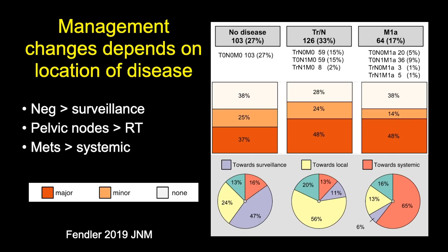The results of PSMA PET really change disease management. Patients with a negative PSMA PET had their management change towards surveillance instead of active treatment. Patients with nodal disease in the pelvis or prostate bed were getting local or radiation therapy to pelvic nodes or oligometastases visualized on PSMA PET. Patients with metastatic disease had a change in management towards systemic therapy. Based on the distribution of disease, PSMA PET has a huge impact on the therapies patients receive.